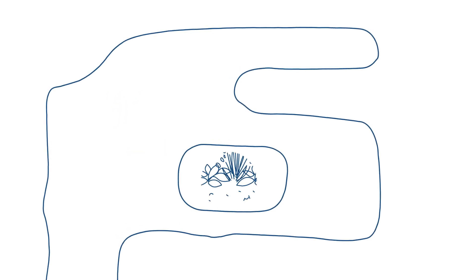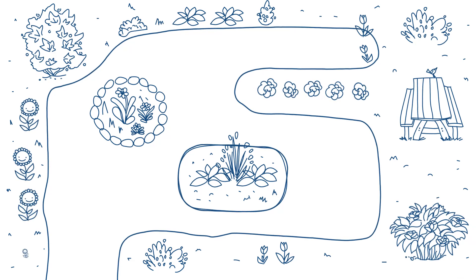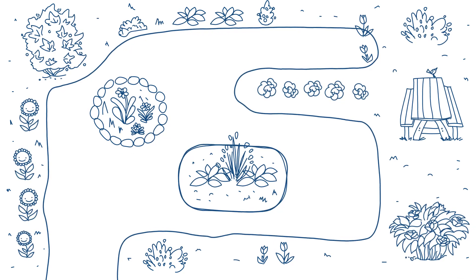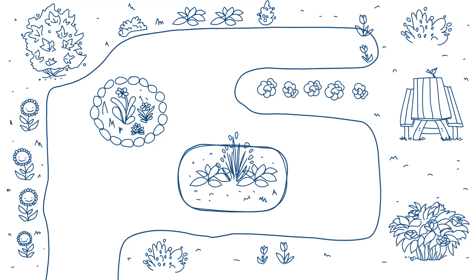Step 4: Add detail. Adding detail is an important part of making a map. Now you should draw the flowers if you haven't already, draw the bushes, and draw any other small things.